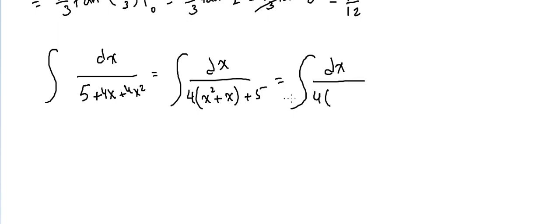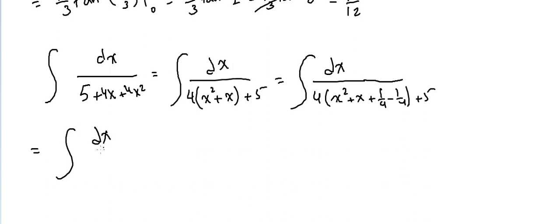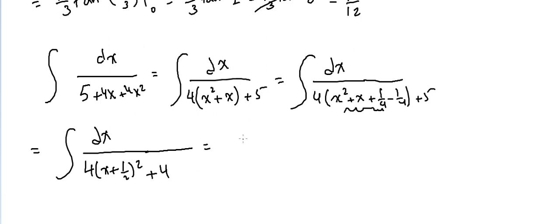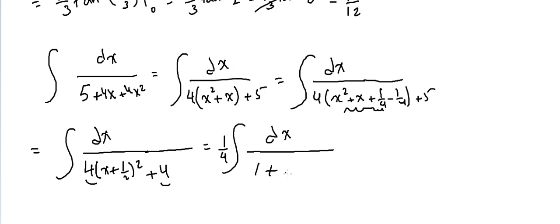To complete the square on x² + x: the coefficient of x is 1, half of that is 1/2, squared gives 1/4. So I add and subtract 1/4: (x + 1/2)² - 1/4. Adding the 5/4 outside: -1/4·4 = -1, plus 5 = +4. The denominator becomes 4·[(x + 1/2)² + 1].